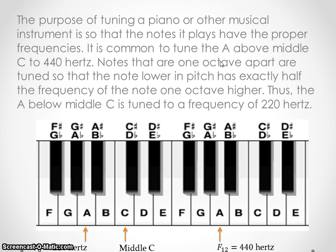And then it goes on to say that notes that are one octave apart are tuned so that the note lower in pitch has exactly half the frequency of the note one octave higher. So if we say, all right, one octave lower would put us at this A, meaning that this A needs to have exactly half the hertz that the one above it does, which it does. It would have 220 hertz. So thus the A below middle C is tuned to a frequency of 220 hertz.